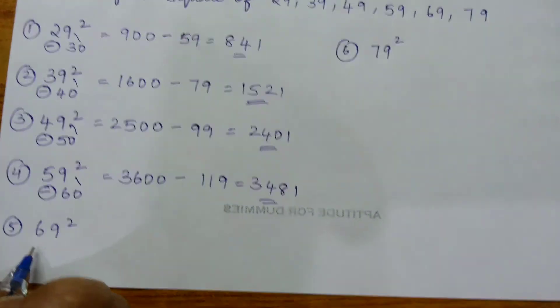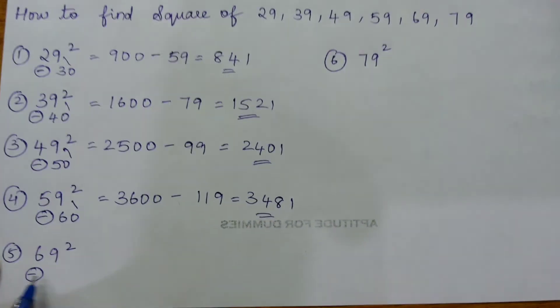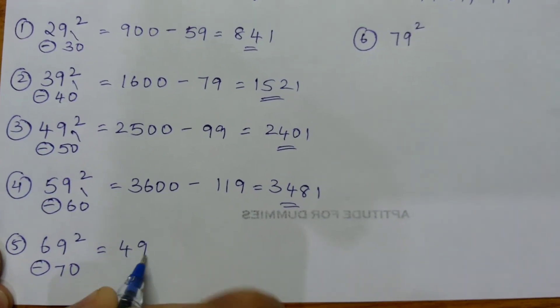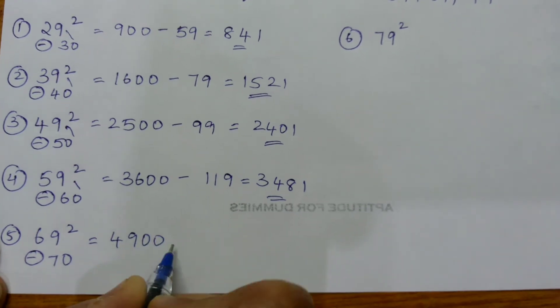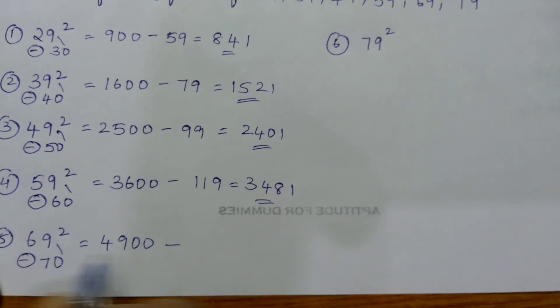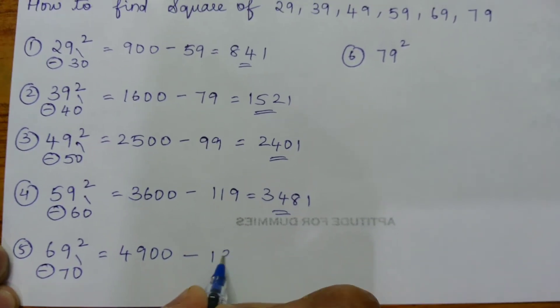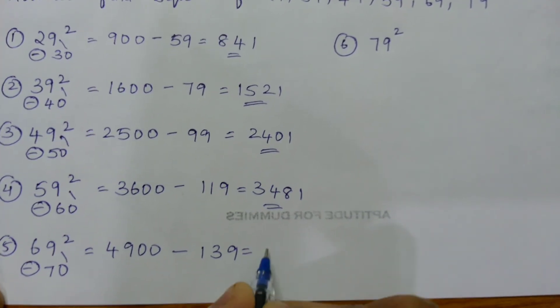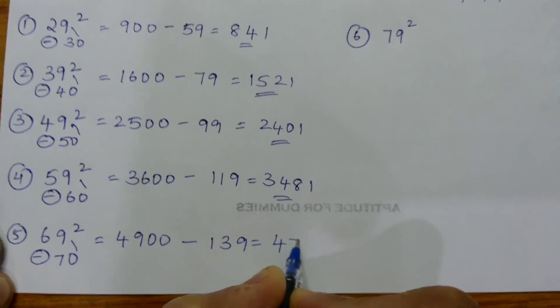69 is one less than the perfect square 70. That is 4900 minus the sum of these two, 139, which equals 4761.